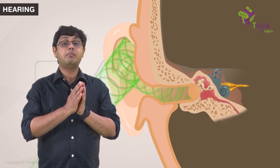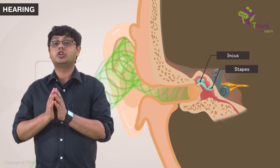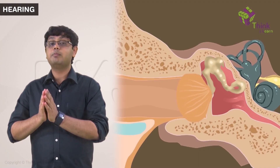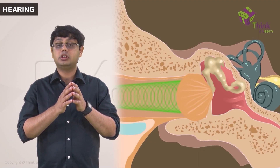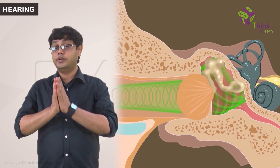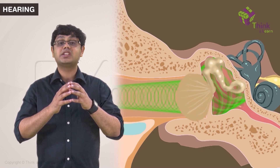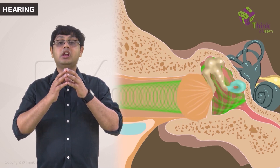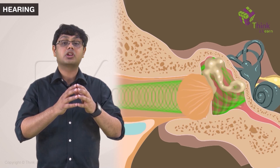Movement of the head of the malleus is transferred to the rest of the ossicular chain. The movement of this chain within the tympanic cavity amplifies the energy transmitted. Firstly, the eardrum has a much larger surface area than the foot of the stapes, even though the same amount of energy is being transferred.